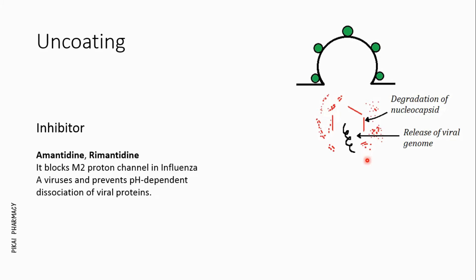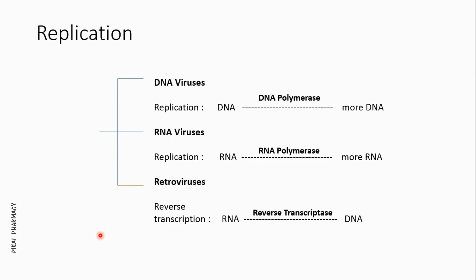There are also inhibitors which inhibit this uncoating process. For example, drugs like amantadine and rimantadine block the M2 proton channel in influenza A virus and prevent the pH-dependent dissociation of the viral proteins, so that the viral RNA of influenza A does not get released.